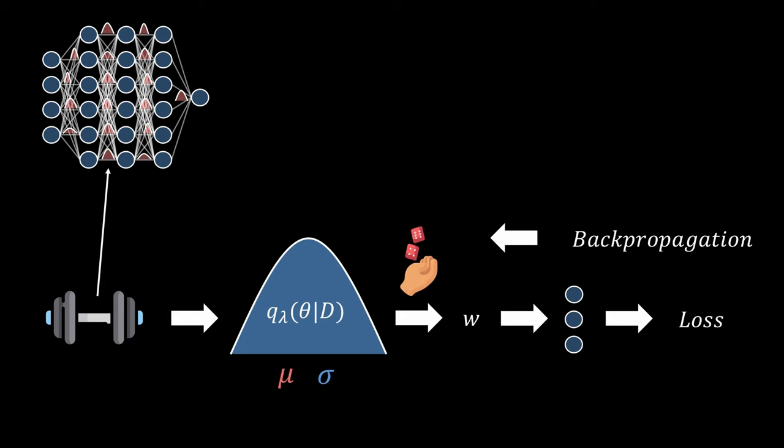In order to update our variational parameters we then perform backpropagation. The special part here now is that we cannot back propagate through a random node. A solution to that is called the reparametrization trick which decouples the sampling from the actual network. The sampling now takes place in a separate distribution outside of the network and we can include this randomness by multiplying it with the standard deviation and adding the mean of the weight distribution. This way the gradients can easily flow through our network and no random node needs to be passed.